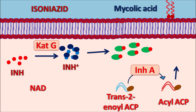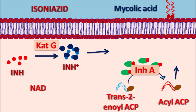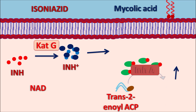This INH-NAD adduct, formed from isoniazid and NADH, is highly active and responsible for the action of isoniazid. It inhibits the enzymatic activity of InhA, thereby inhibiting the conversion of trans-enoyl-ACP into acyl-ACP. By inhibiting this step, the adduct prevents the synthesis of mycolic acid, so the cell wall is not synthesized. When the cell wall is deficient in mycolic acid, cell contents leak out of the membrane, reducing its rigidity and resulting in bactericidal activity.